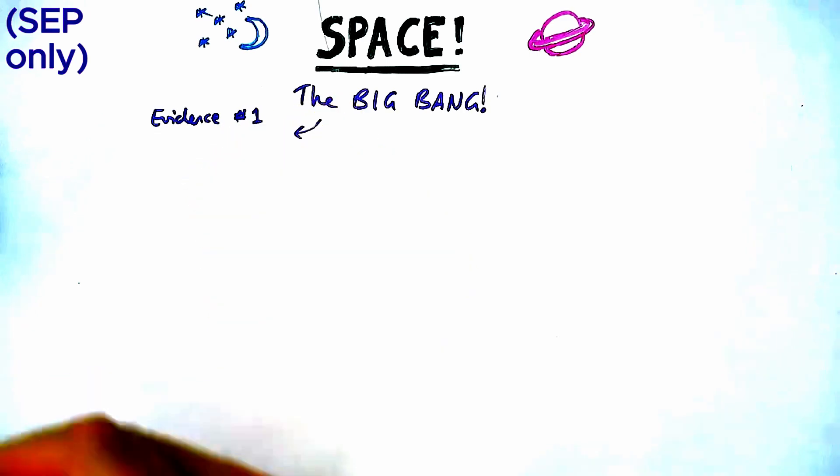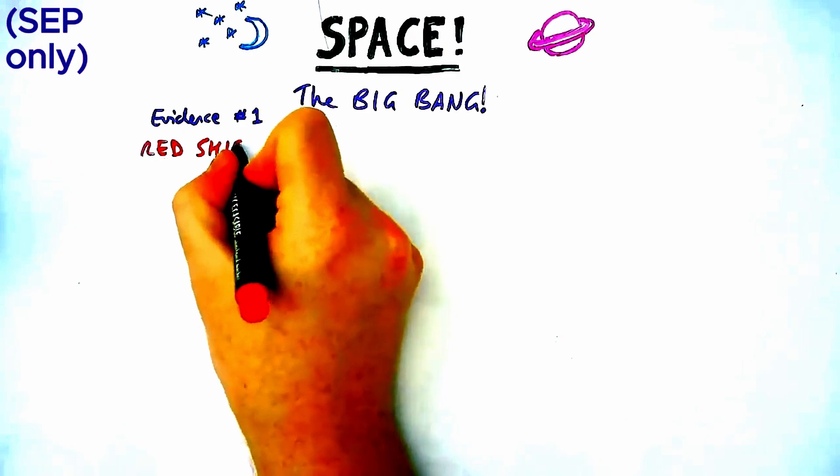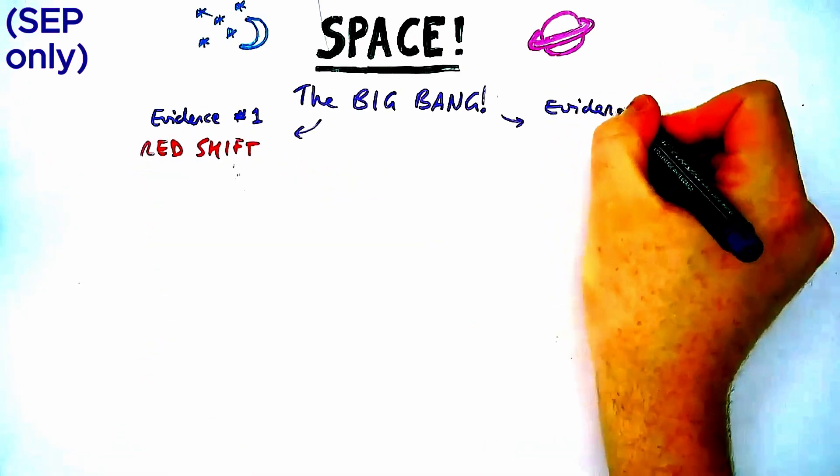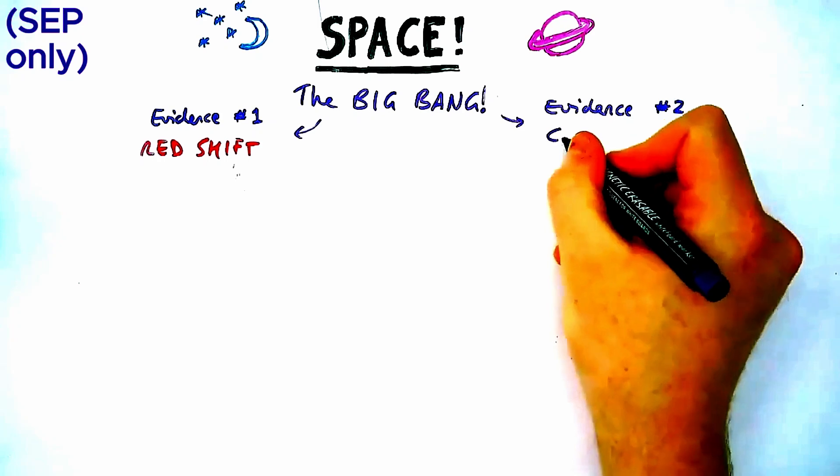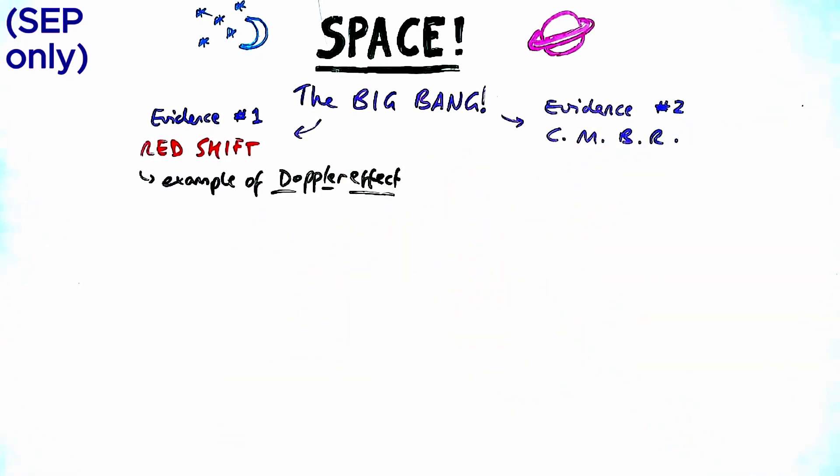Part two of this video talks about the Big Bang, which we have a bunch of evidence for. Evidence number one is redshift. Evidence number two is CMBR. Redshift is an example of the Doppler effect.